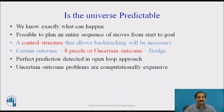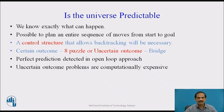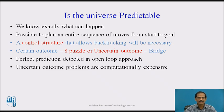The next key aspect is: is the universe predictable? Do we know exactly what can be the consequence of a happening? It is possible to plan an entire sequence of moves from the start to the goal. We embed this into a control structure that allows backtracking wherever necessary. For example, in the 8-puzzle or the bridge game, perfect predictions are detected in the open loop approach, while certain-outcome problems are computationally expensive because they require repetition of computations.